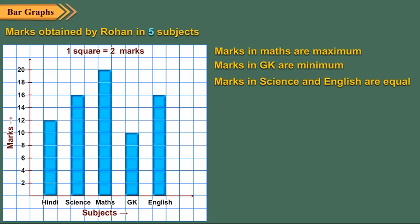Now let us find the marks obtained by Rohan in each subject from this bar graph. The bar for Hindi reaches up to the 12th square. Also, one square represents 2 marks. So marks in Hindi equals 2 times 6 which equals 12.